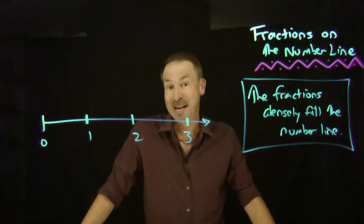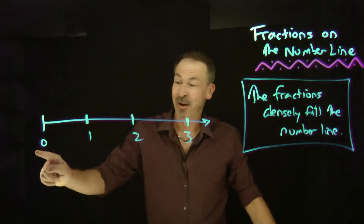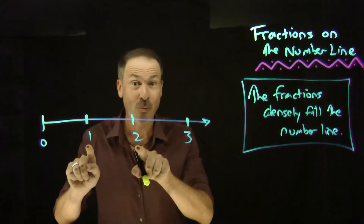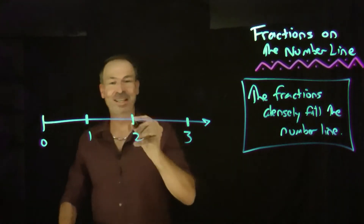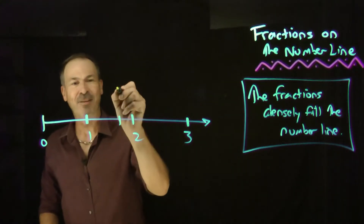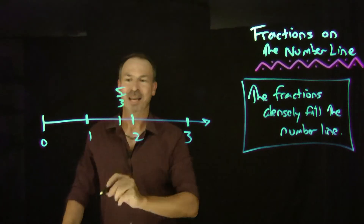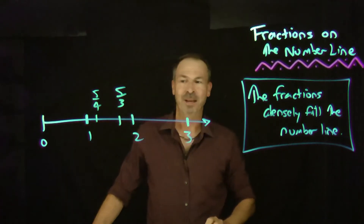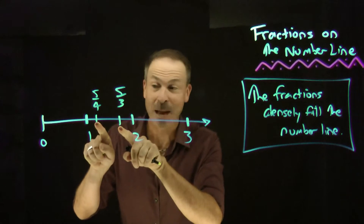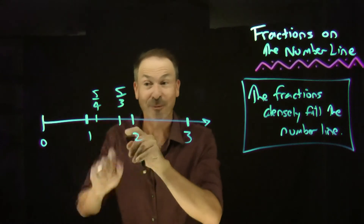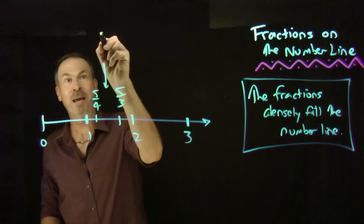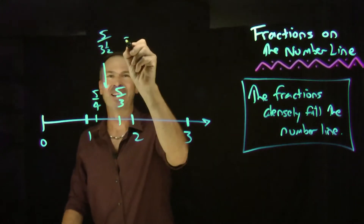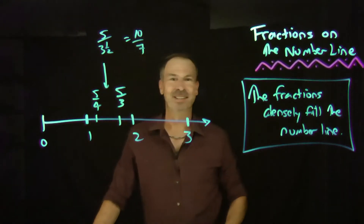And there are numbers on the number line. There are the whole numbers. And between any two consecutive whole numbers, there are the fractions. For example, here's the fraction 5 thirds, and here's the fraction 5 fourths. And between any two fractions on the number line, there's a fraction between them. For example, between them would be 5 and 3 halves. If you like, you can think of that as 10 sevenths.